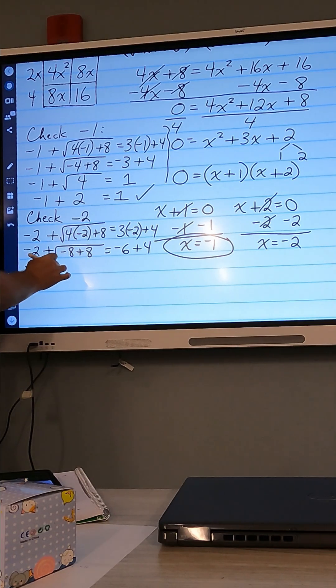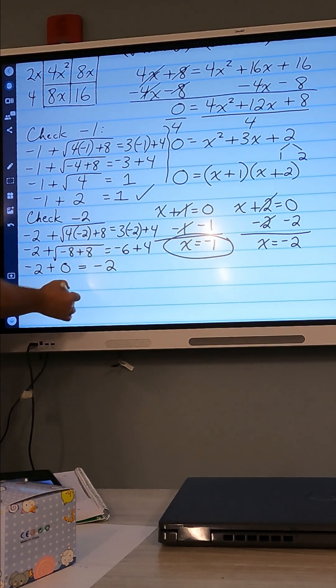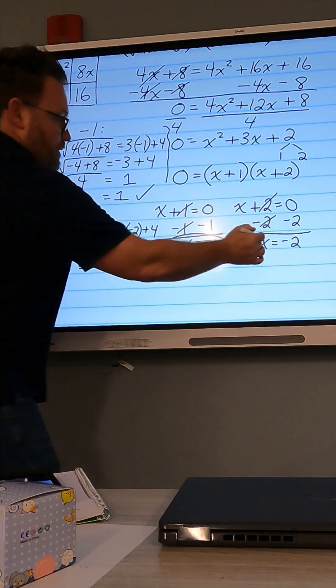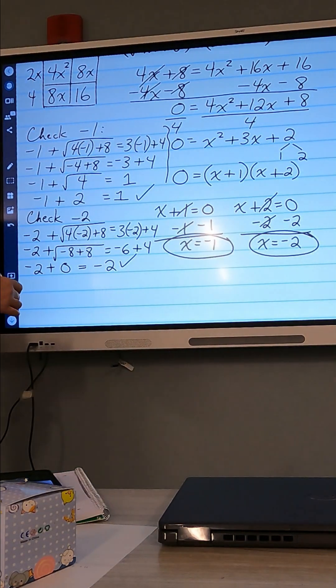Negative 8 plus 8 is 0, so we have square root of 0, which is 0. Does that equal negative 2 over here? Yes, it does. So this one also checks out, and we have the two solutions, x equals negative 1 and x equals negative 2. Thank you.